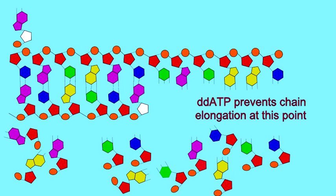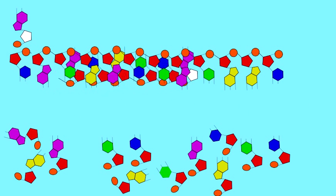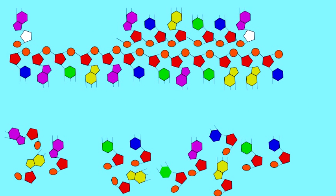In this case, the sixth residue in the chain. At this point, the chain would stop elongating and the chain would only be six nucleotides long.